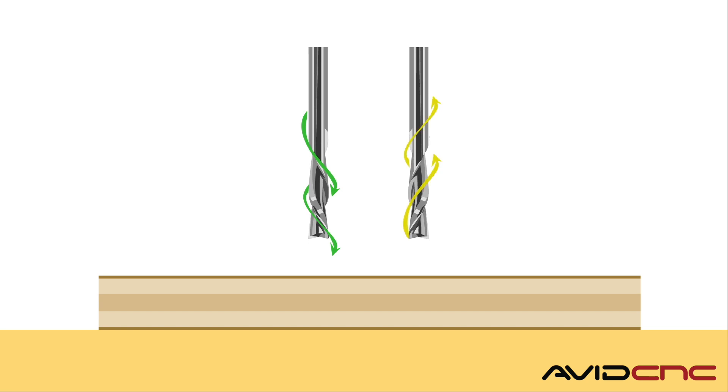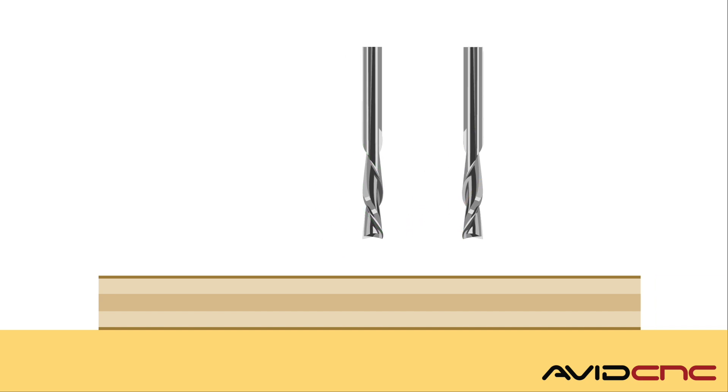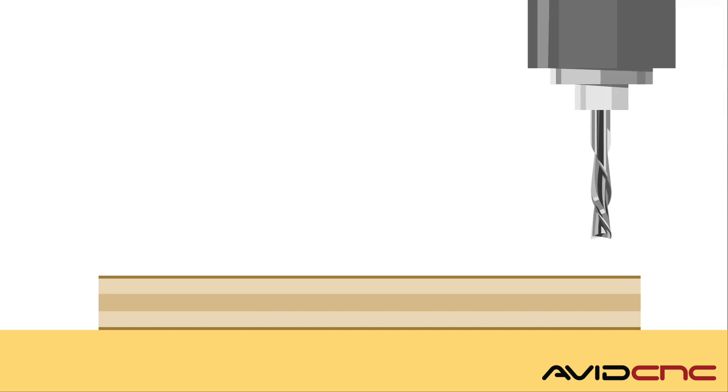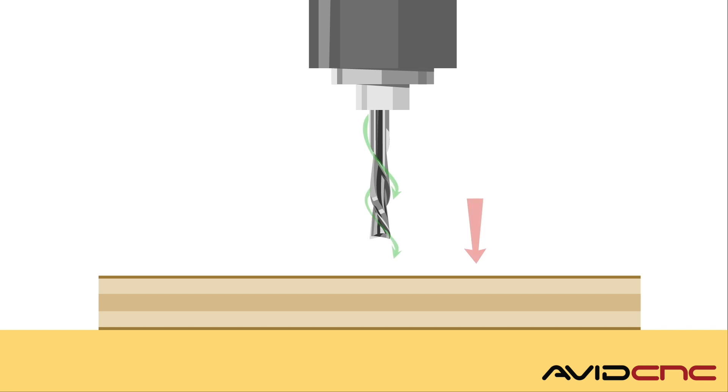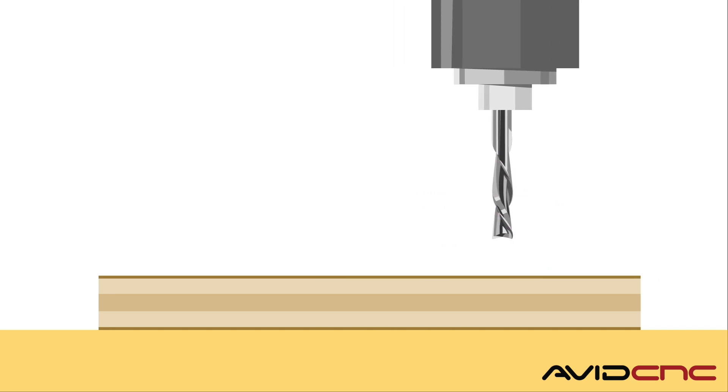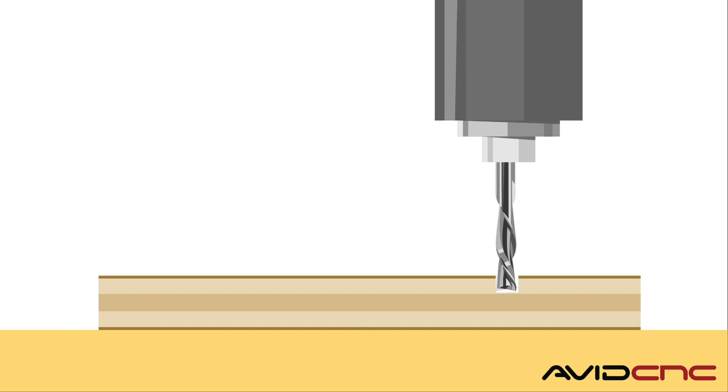Let's take a closer look at down cut bits, or down spiral bits. These bits create a downward pressure which helps maintain a smooth surface and preserve the top veneer or surface of the material, making them ideal for machining pockets and recessed areas such as slots or dados.